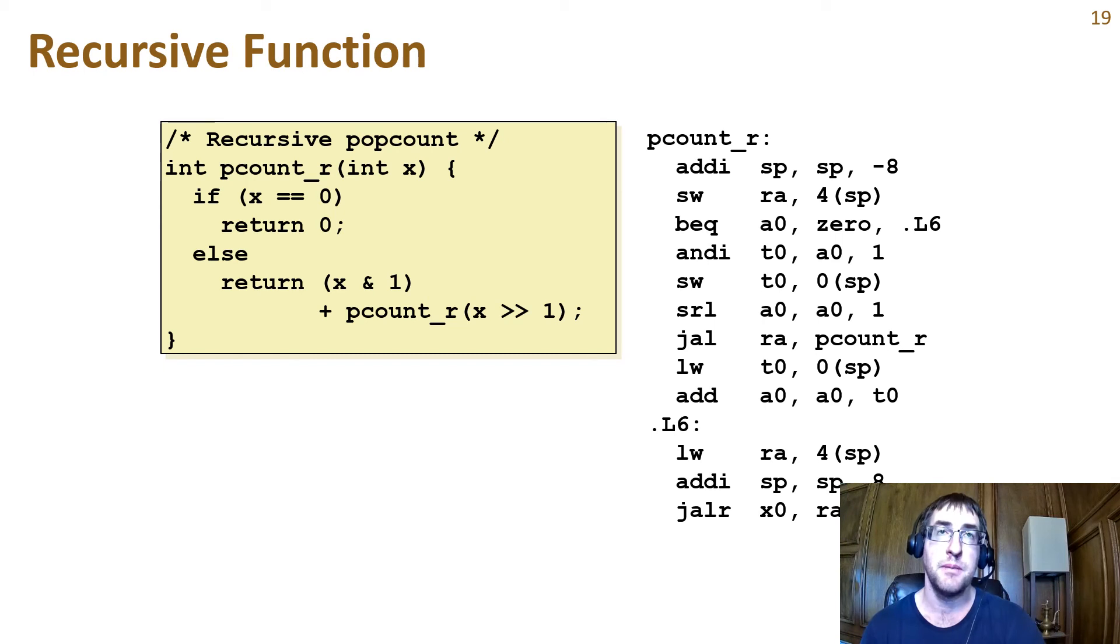Now we'll revisit the popcount function from our earlier discussion on loops but implement it as a simple recursive function. Here is the high level code and the assembly implementation. The basic logic is to mask the least significant bit of the input argument with 1 and add it to the recursive sum from shifting the input by 1. We'll walk through each part of this function.